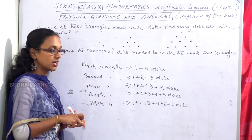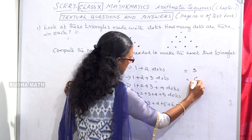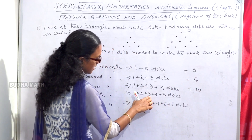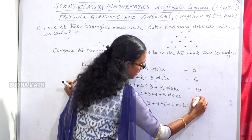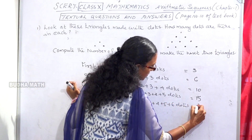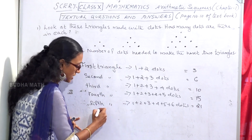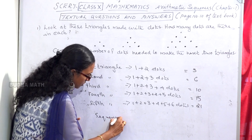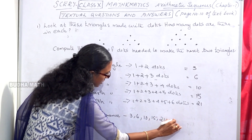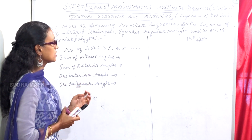We make the sequence: 1, 3, 6, 10, 15, 21. This is our sequence.